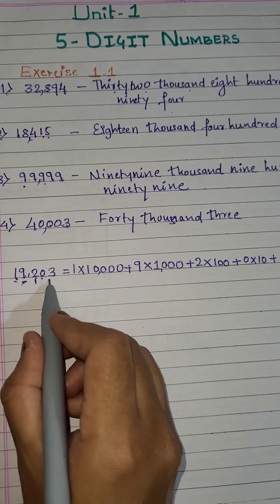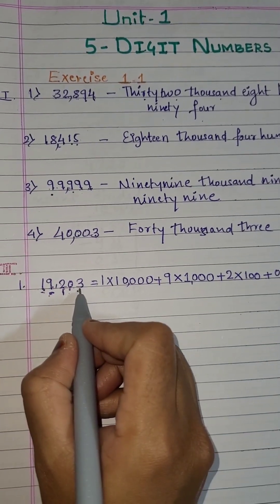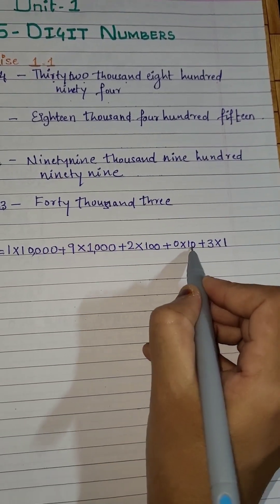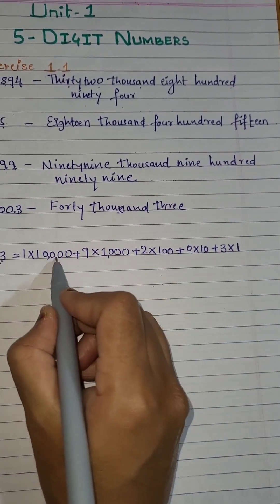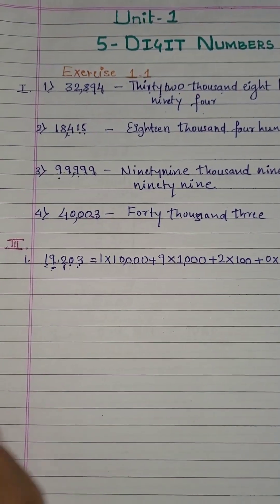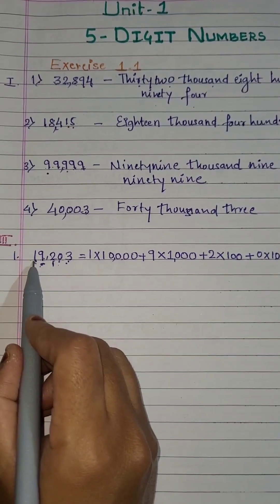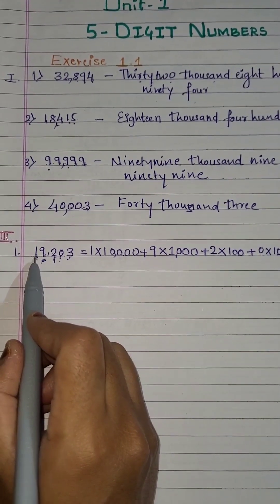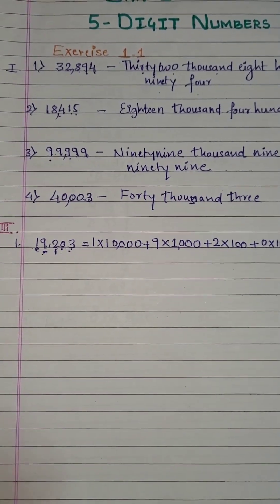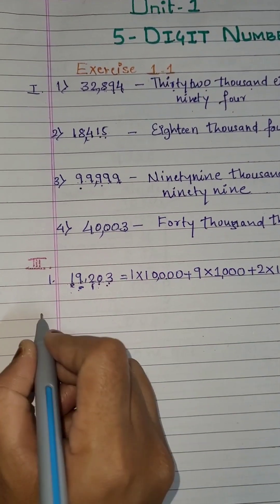So 3 — 3 here into. What is the place? In which place is 3? Unit. So into 1. You can see: unit, 10, 100, 1000, 10,000. Now this is called the expanded form. You have to start from the number which is in the highest place. Here which is the number in the highest place? That is 10,000. So let's take another example.